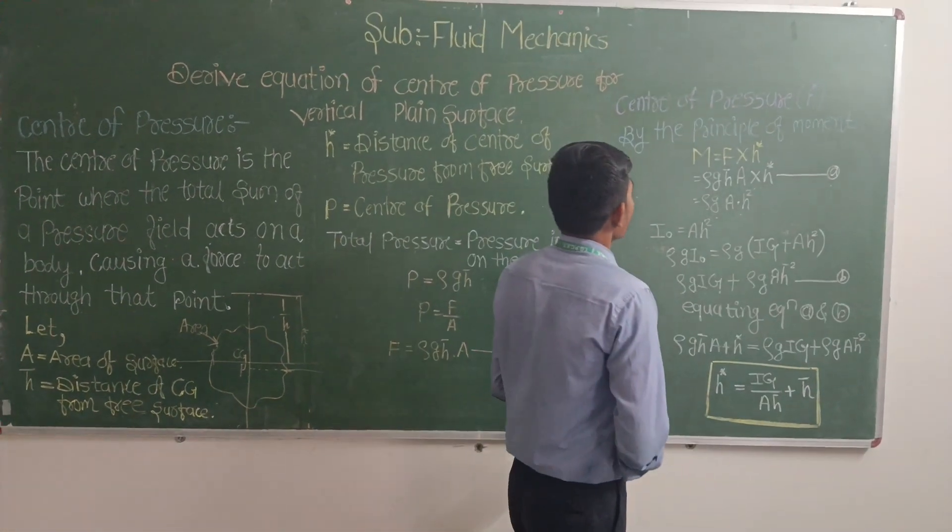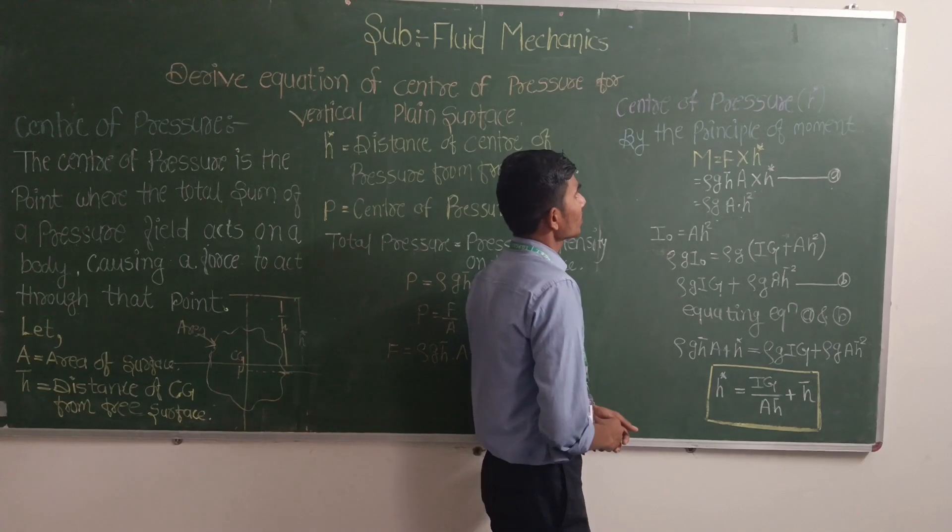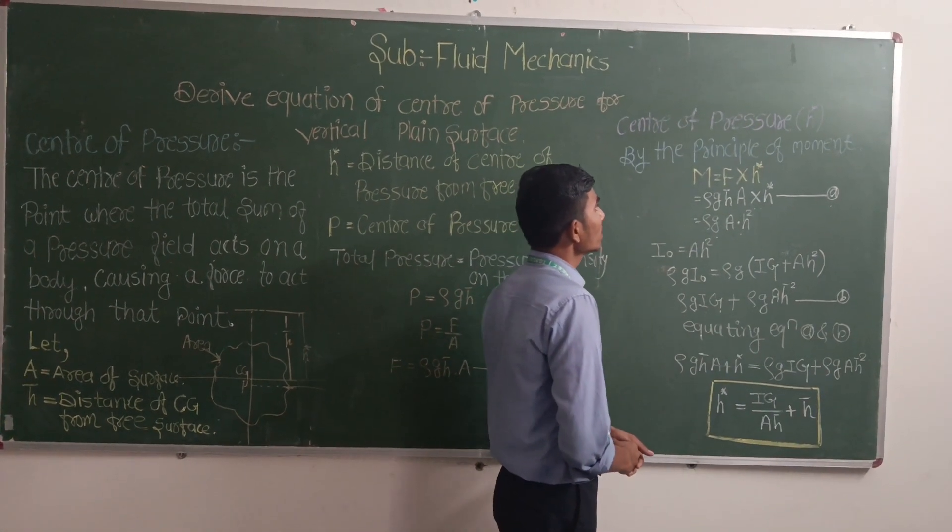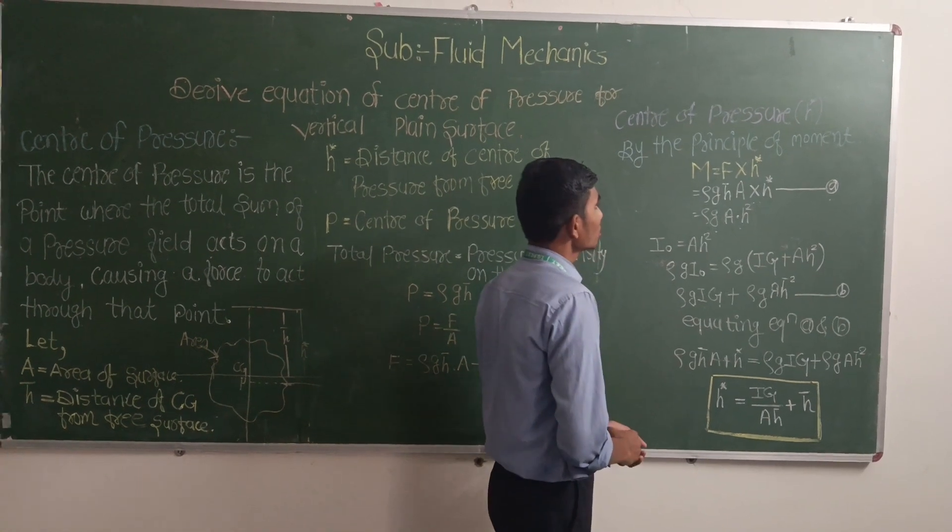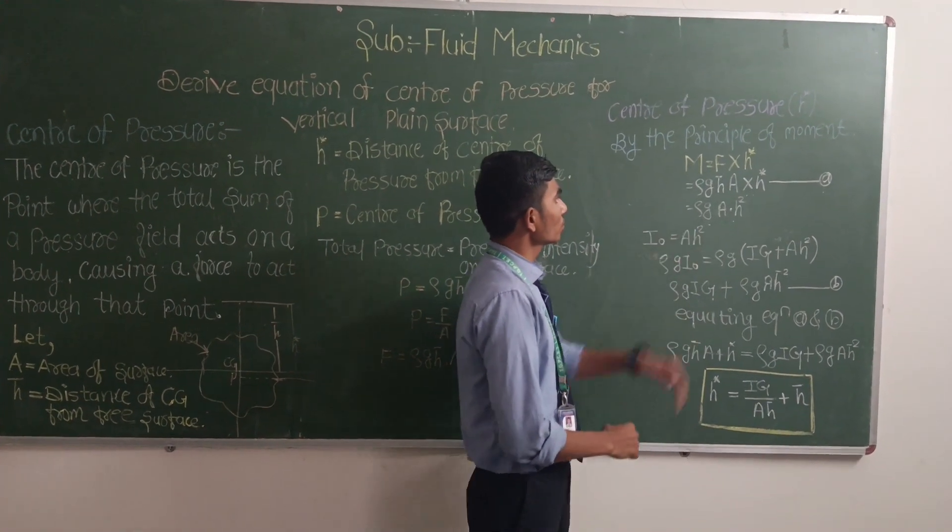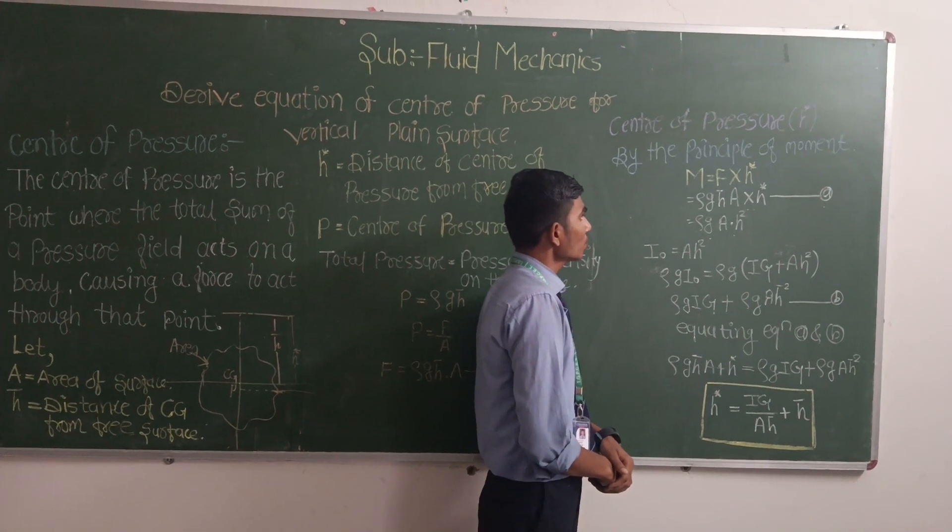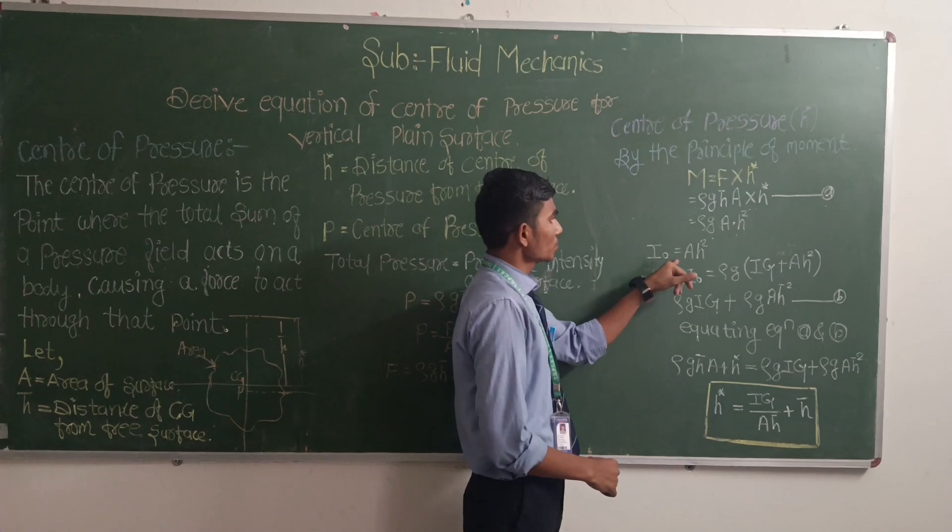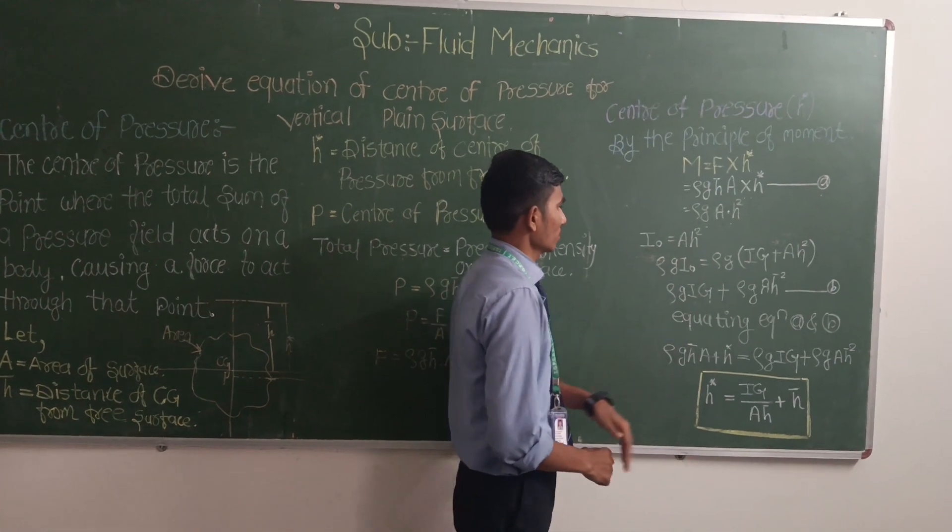Center of pressure is one. It is the center of pressure. I will get H-star equals I-z, where I-z is equal to A into H-square, rho into G is equal to I-z, rho into G.